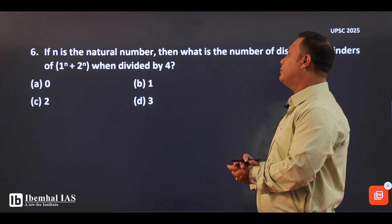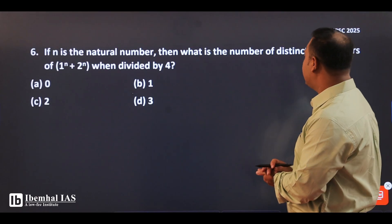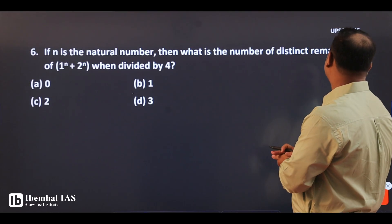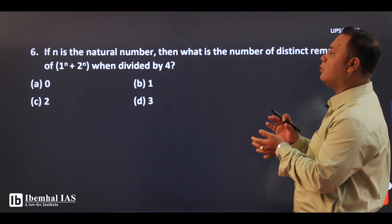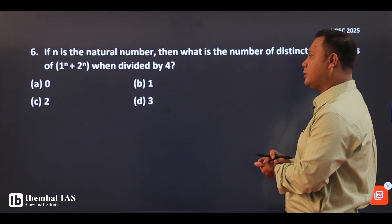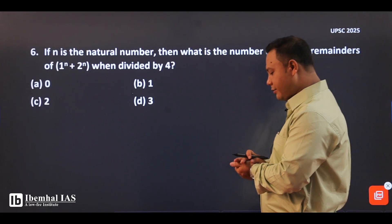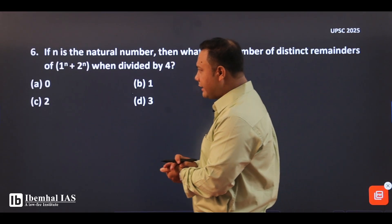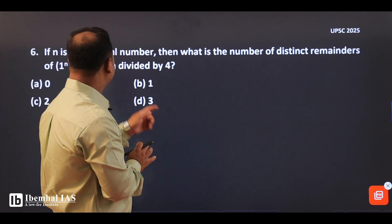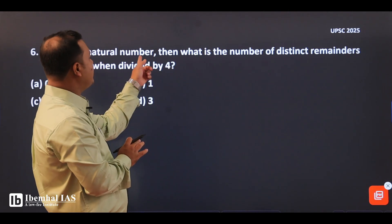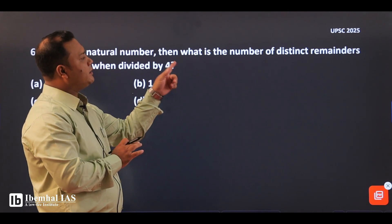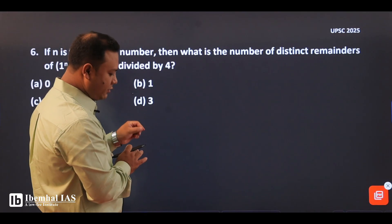If n is a natural number, then what is the number of distinct remainders of 1 to the power of n plus 2 to the power of n when divided by 4? So for natural numbers, what is the number of distinct remainders?